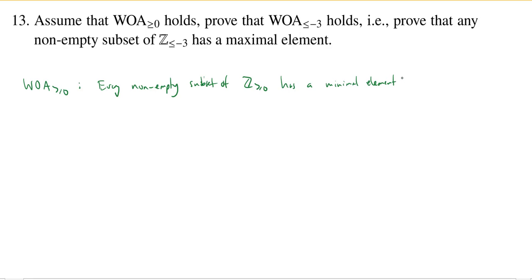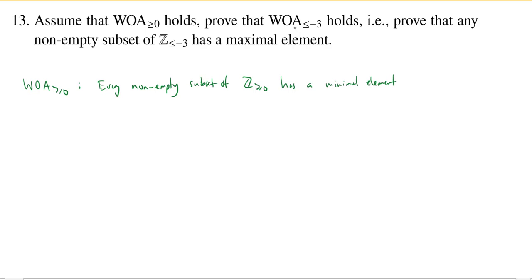Note it's very common for people to say 'of course 0 is the smallest element.' Yes, if you are looking at the set of all non-negative integers, 0 will be the smallest element. But if I take a non-empty subset, it may not contain 0. So the well-ordering axiom just assumes there is a minimal element. What we would like to do is prove that WOA ≤ -3 holds — that is, every non-empty subset of Z ≤ -3 has a maximal element.